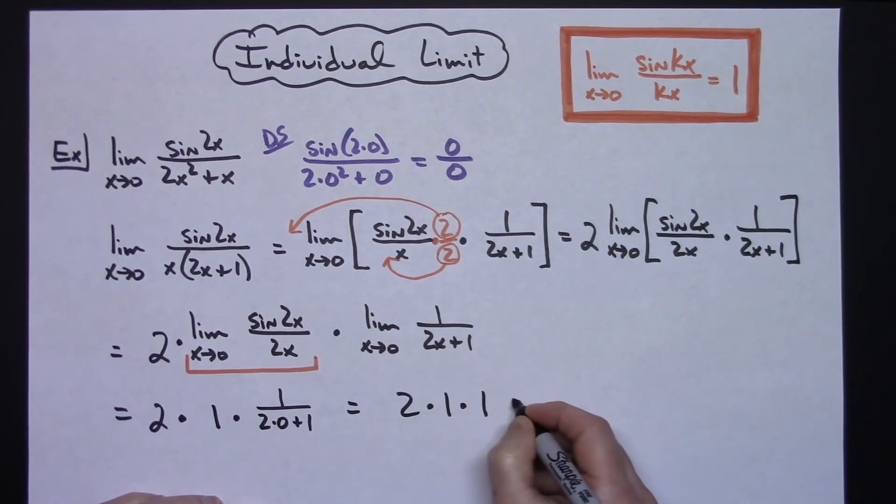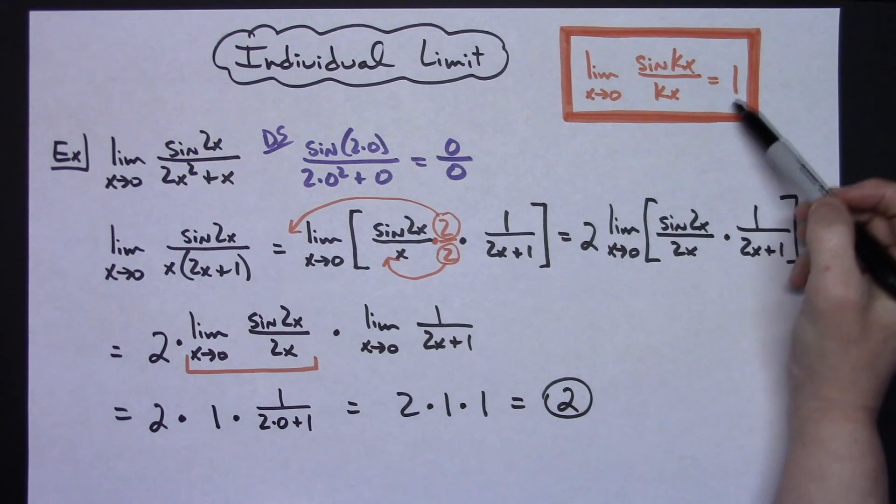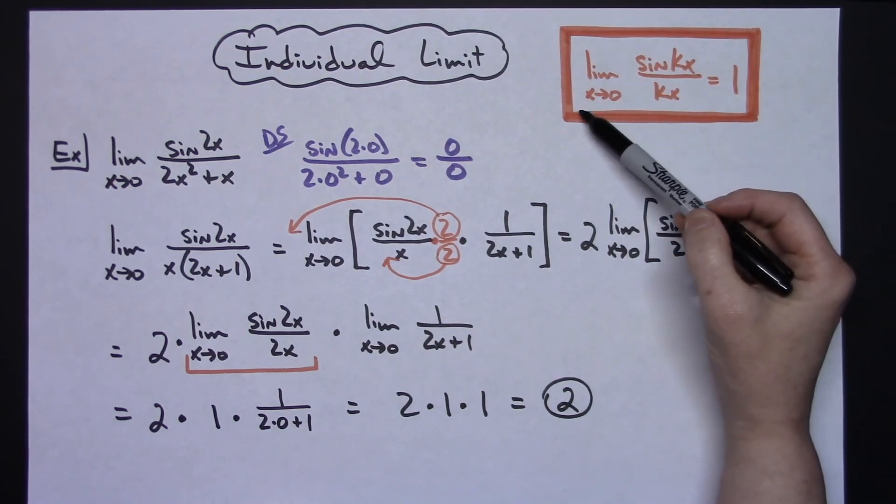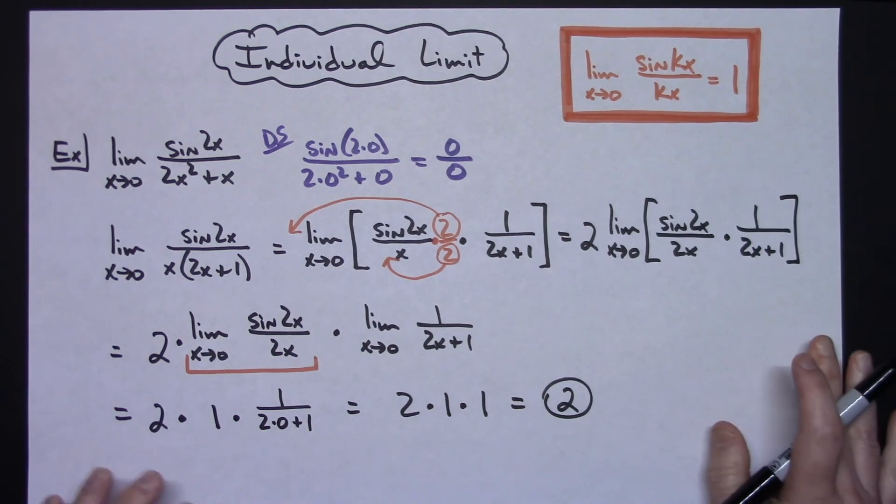So one quick little limit there showing all of the steps necessary to actually work that limit out algebraically and taking advantage of the fact that we do know that the limit as x approaches 0 of sine kx over kx is going to be 1.